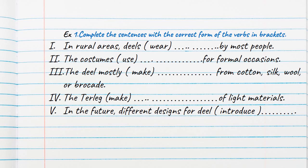Number four: the tirlik — in brackets 'make' — you have to change this into blank, called light material, but in present passive. Number five: in the future, different signs for death — into present passive, of course — you have to change this.